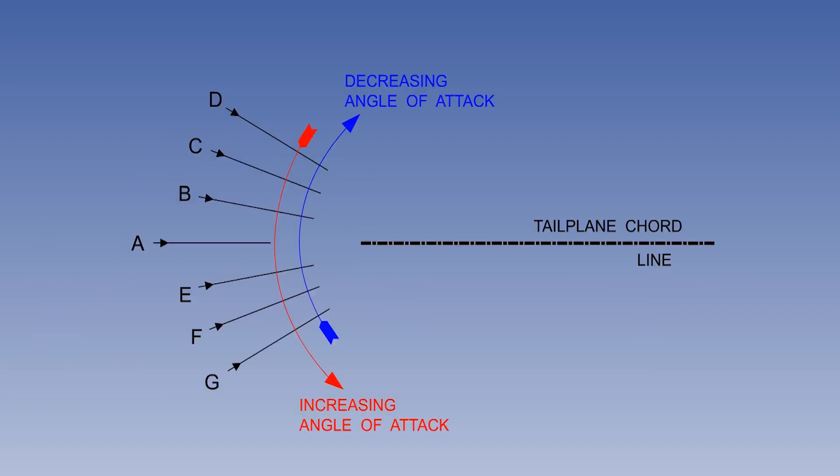Increasing downwash, G to D, gives a decrease in tailplane effective angle of attack, and decreasing downwash, D to G, gives an increase. It is important to understand the effect of changes in downwash on the tailplane's angle of attack, but vital to understand their influence on pitching moments.